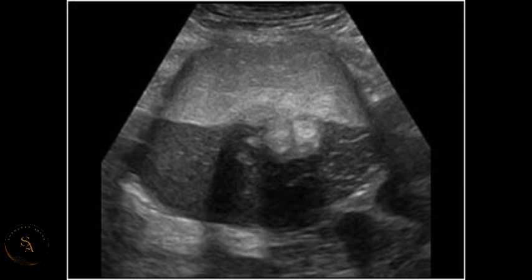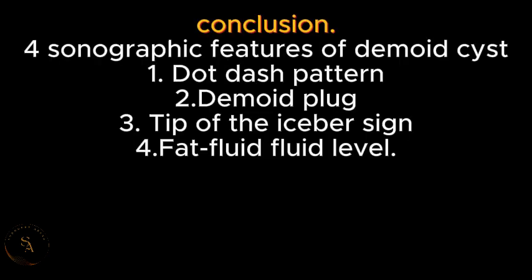In summary, there are four sonographic features to look for in a dermoid cyst: the dot-dash pattern, the dermoid block, the tip of the iceberg sign, and the fat-fluid level.